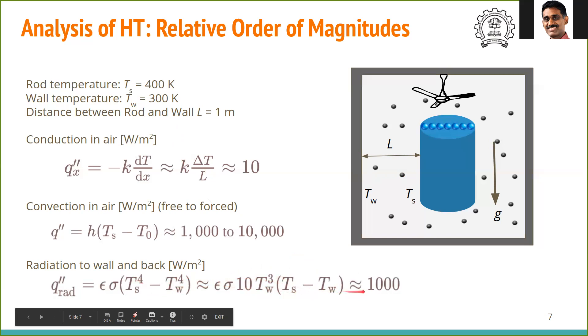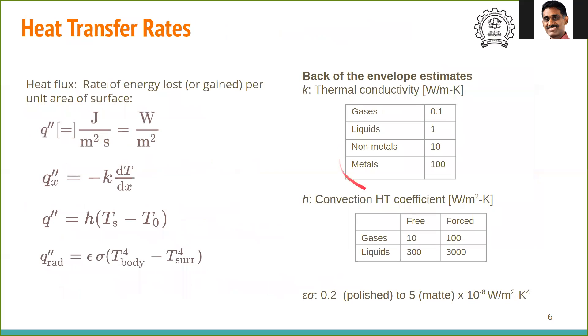So conduction, convection and radiation. We see that the most dominant is the forced convection, which is 10,000. Whereas free convection and radiation are all of similar magnitude. Whereas conduction in air is way less, it's about 100 times less. So using this kind of simplifications and these estimates, we can quickly get to understand the modes of heat transfer which are important. Thank you.